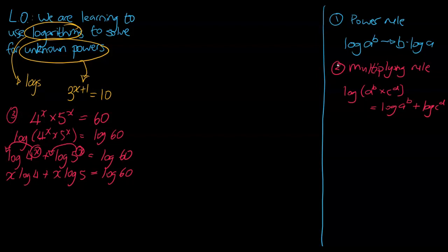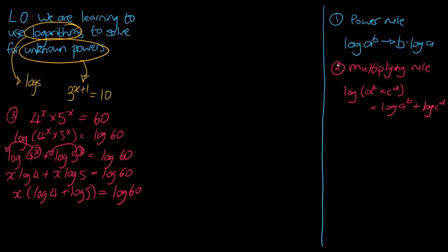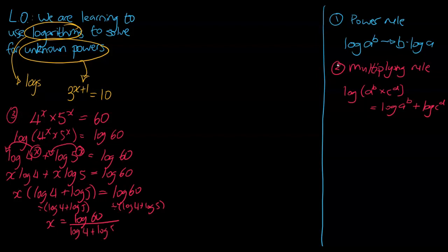So far we're all good. Now we need to go ahead and solve. Log 4, log 5, log 60 are just numbers, and the same algebraic procedures apply. The big obstacle is we've got two x's — we only need one. We're going to factorize: take out x, leaving log 4 plus log 5 in a bracket, still equal to log 60. So x times (log 4 + log 5) equals log 60 — divide both sides by (log 4 + log 5). So x equals log 60 divided by (log 4 + log 5), which gives 4.225, rounded to three decimal places.